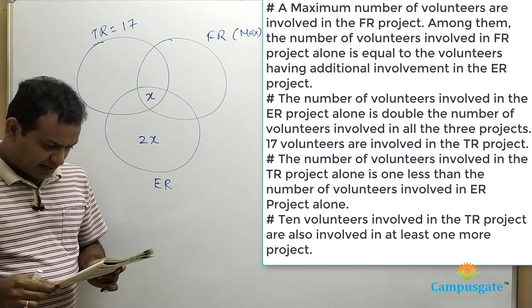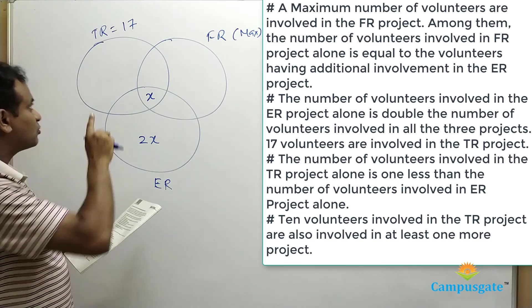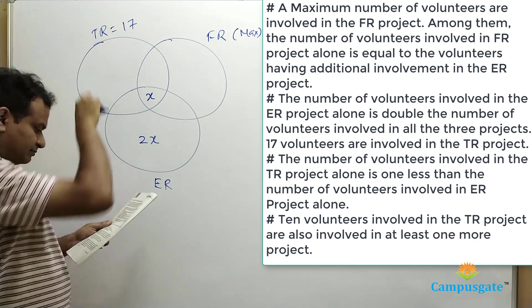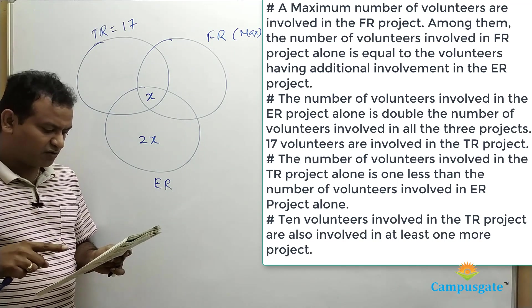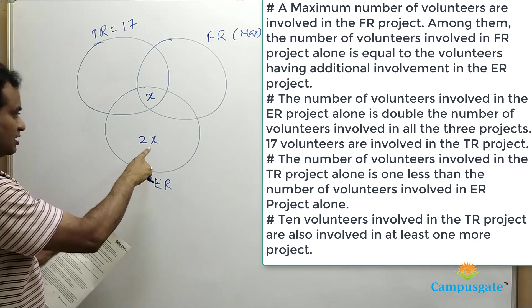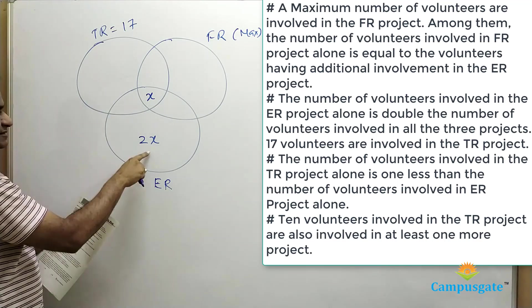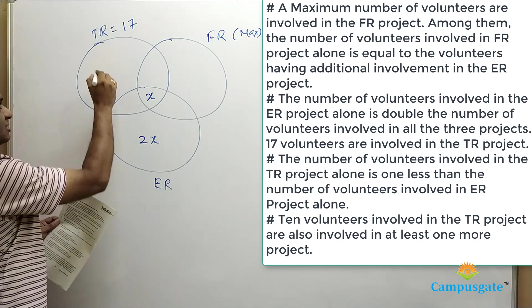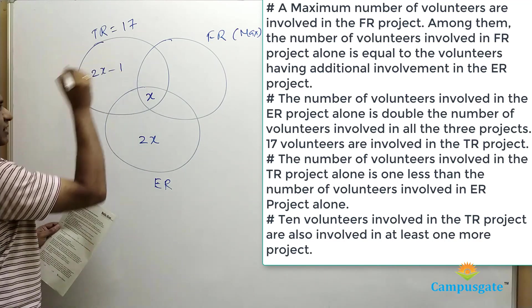Next clue: the number of volunteers involved in TR project alone is 1 less than the number of volunteers involved in ER project alone. That means TR alone should be 2X minus 1.